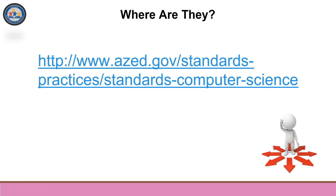So where are they? The approved Arizona computer science standards are available for download at the address shown there on the screen. On the same page, there's also a download link for the standards broken out by essential concept instead of by grade.